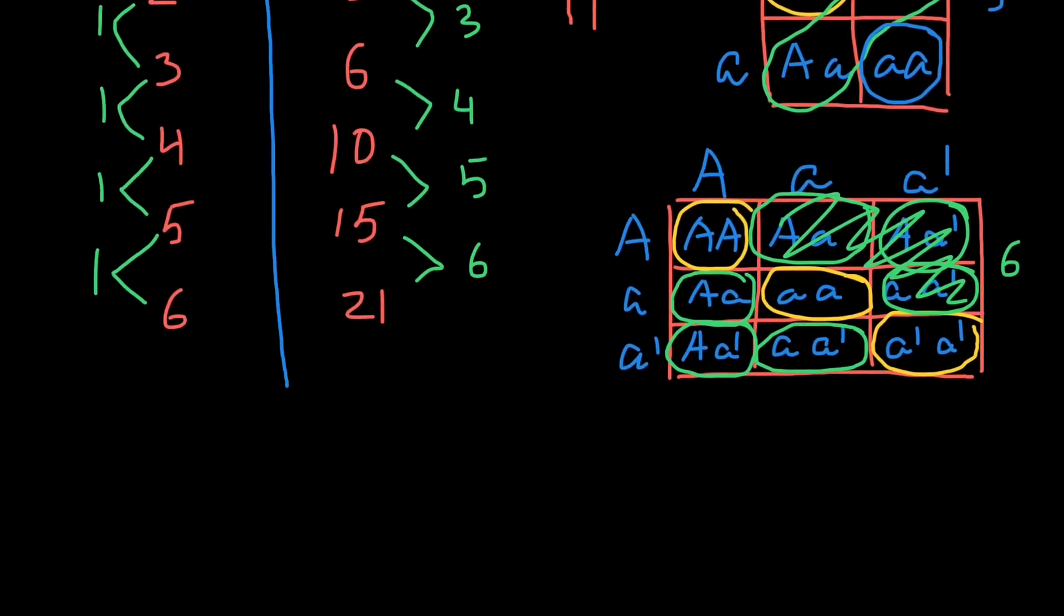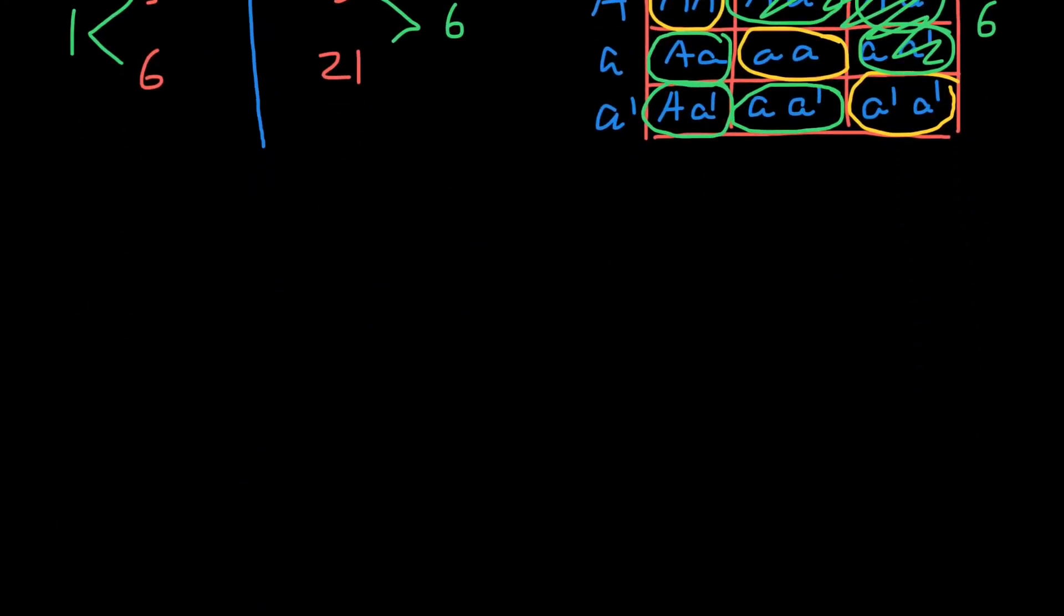If we build a graph, our graph would look as follows. So this is going to be number of alleles, and here is going to be number of genotypes. So k, and here is going to be our formula, k squared plus k divided by two. And our graph would look as follows.